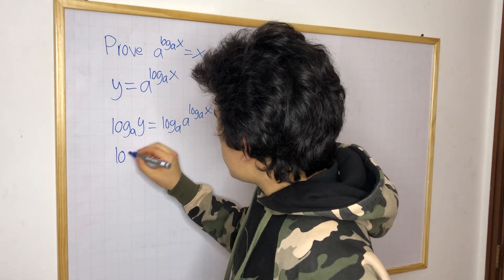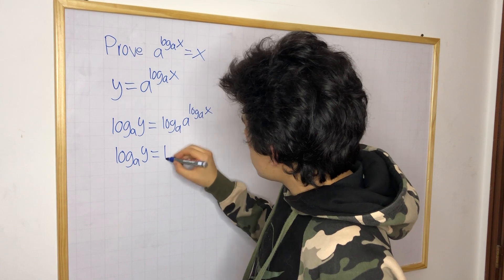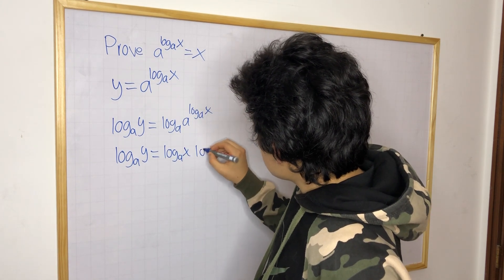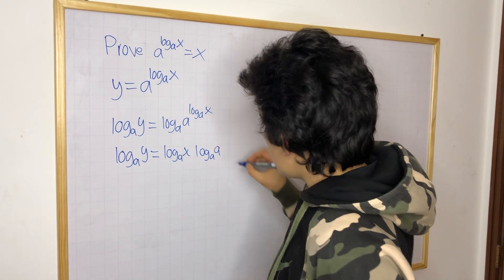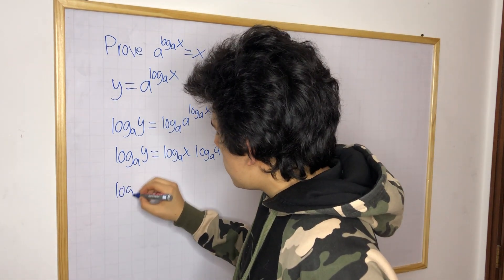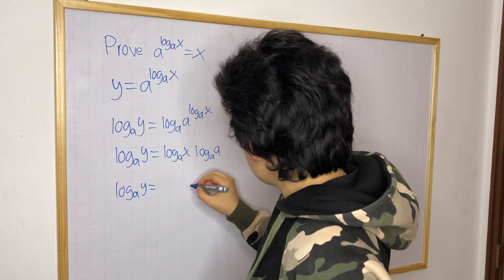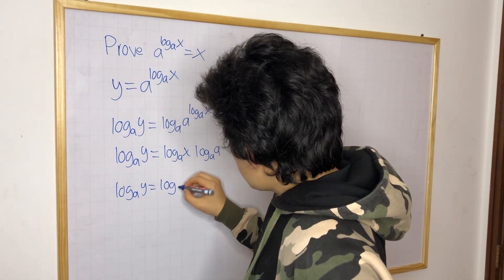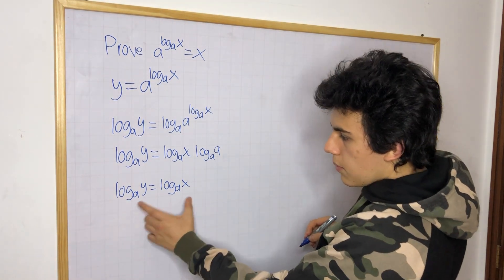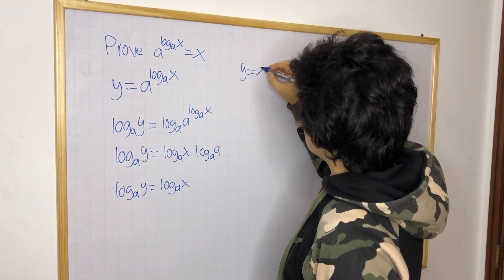So we have log base a of y is going to be equal to — move this to the front — log a of x times log base a of a. Now we know this is going to be 1, so we have log base a of y is equal to log base a of x. And since we're taking the log base a on both sides, this is simply saying that y is equal to x.